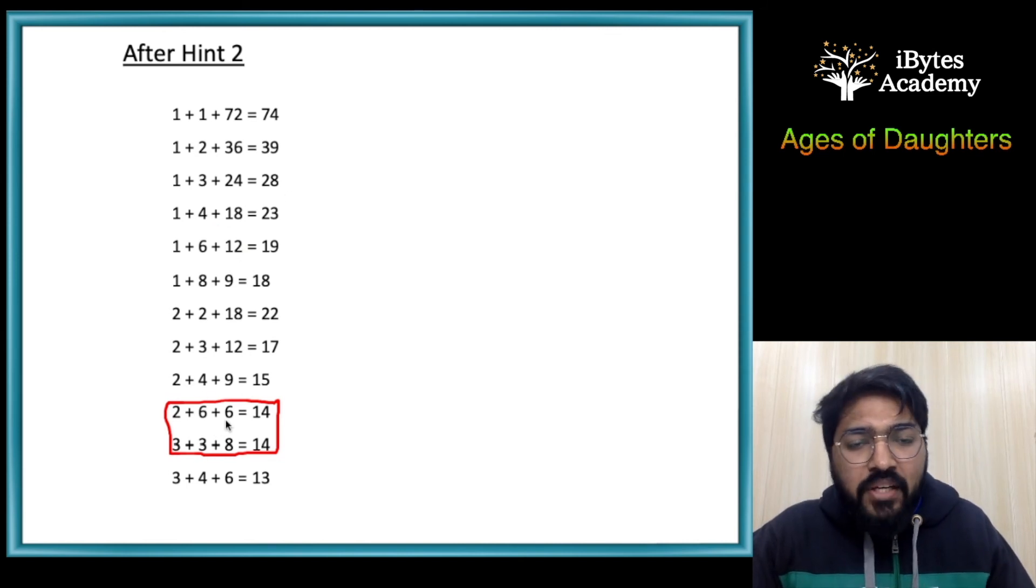Now out of these two, one is the answer: either the ages are 2, 6, 6 or the ages are 3, 3, 8. But the third hint says that the oldest one likes strawberry ice cream. Definitely there is one girl out of the three which is oldest.